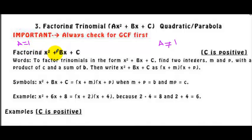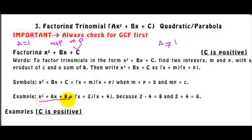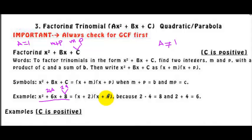When you have x squared plus bx plus c, your goal is to get two factors of c so that when you add these two factors, the sum is equal to b. For example, the answer is x plus 2 and x plus 4. The factors of 8 — 2 and 4 — give a sum of 6. Once you have these two numbers, you can find the factors: x plus 2 and x plus 4.